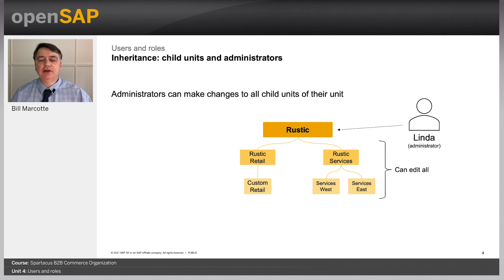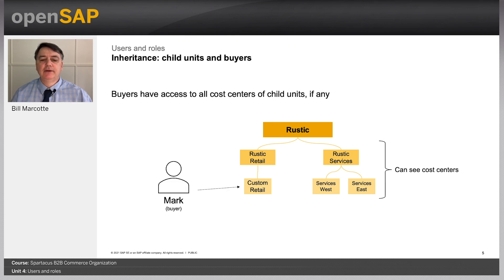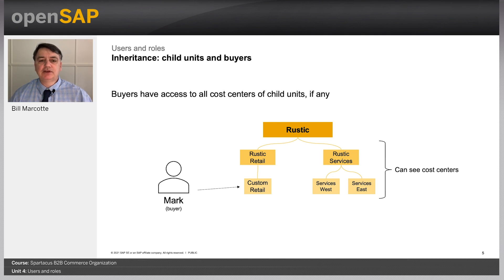There's an important distinction: there's the role of approver, and then there's a person assigned to do approval tasks for a unit — these are separate things. The role and placement in the unit hierarchy is important. Linda Wolf in the sample data is an administrator assigned to the root unit and has access to change everything under it. If a buyer were assigned to the root unit, they would be able to see all cost centers and select from all of them across the entire hierarchy. Mark Rivers, however, only has access to one cost center and one shipping address because of how his Custom Retail unit is set up.